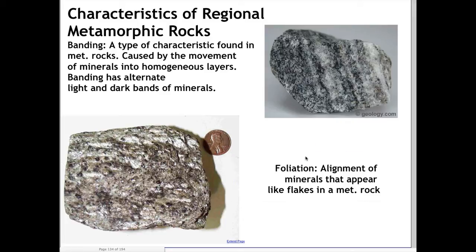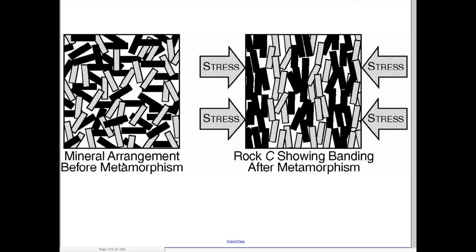A slightly less dramatic change is foliation, which has the look of being incredibly shiny and flaky. These rocks kind of flake off where the minerals have aligned and weakened, so pieces just fall off — the mica crystals align in the same direction and become relatively weak. This alignment happens because igneous rocks have randomly oriented minerals, but stress — the geologic word for pressure — causes those same minerals to line up, with darker minerals together and lighter minerals separate, producing that banding effect.